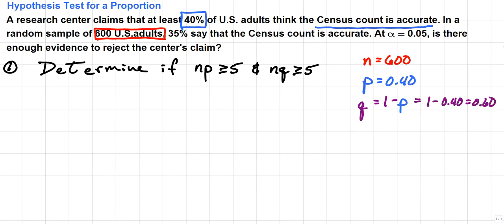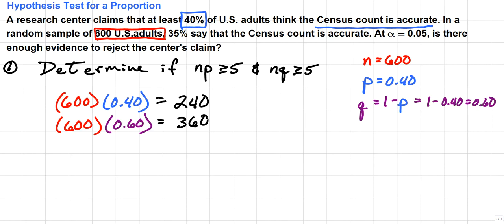So let's do the calculations of n times p and n times q. We start with 600 and multiply that by p, which is 0.40, and that equals 240. Then we multiply 600 by q, which is 0.60, and if you take 600 and subtract 240, you get 360.